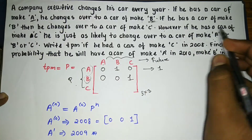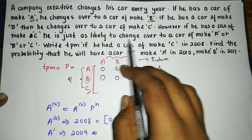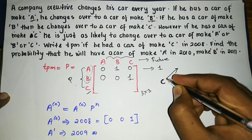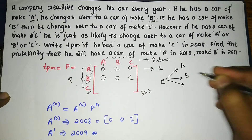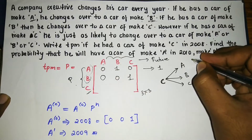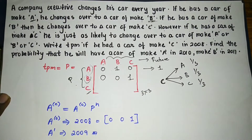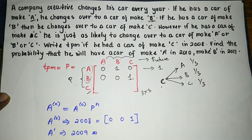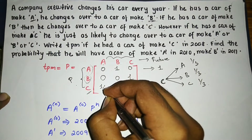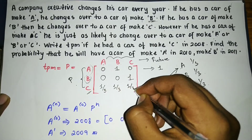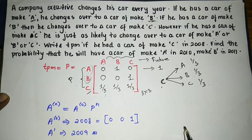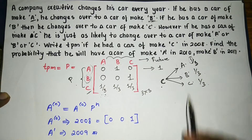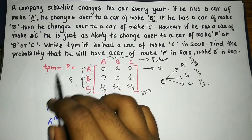If he has a car of brand C, he is just as likely to change to brand A, B, or C — three equal possibilities. So the probability for each is 1/3, 1/3, 1/3. You can convert to decimal values if needed. Out of three choices, one each is taken, giving 1/3 for each. So we have obtained the full TPM matrix, denoted by capital P.